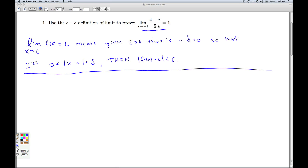So let's fill in the particulars for this problem. X is getting close to negative 1 so my C is negative 1. This is the function I'm looking at and that's the target limit L. So here's what I need to do. Given epsilon greater than 0, I need to find a delta bigger than 0 so that if 0 is less than the absolute value of x minus negative 1, that would be x plus 1 is less than delta, then the absolute value of f(x) minus L, so 4 minus x over 5 minus 1 is less than epsilon.